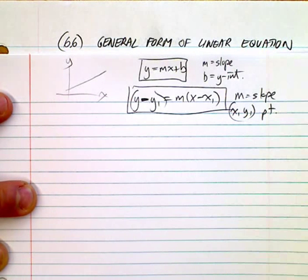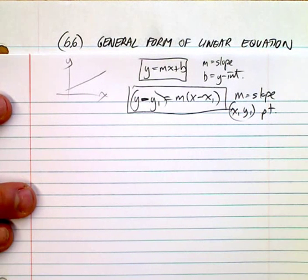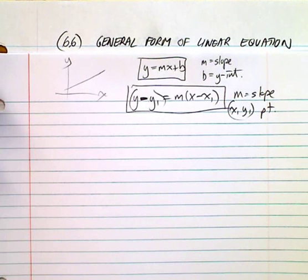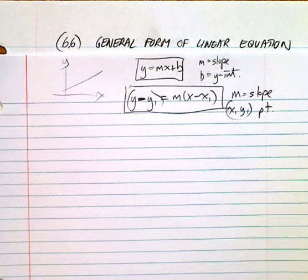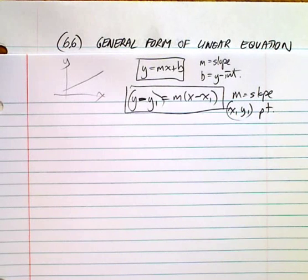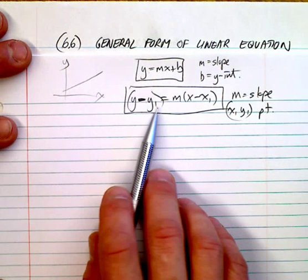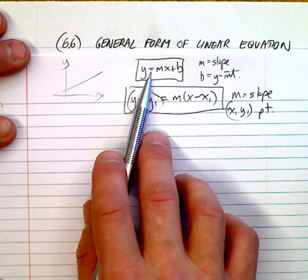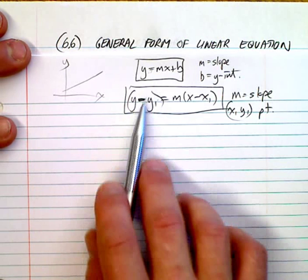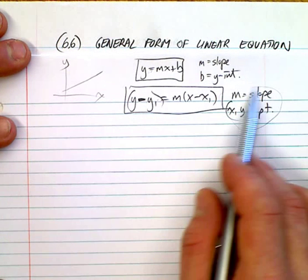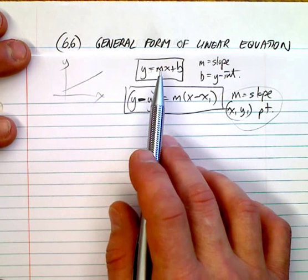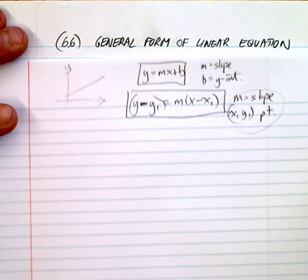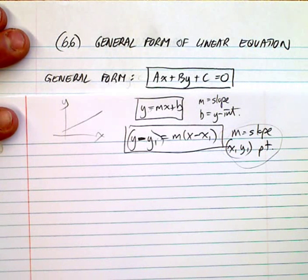All these forms have their uses and applications, but they're all doing basically the same thing. Which form you use depends on the situation. The slope-intercept form is best for graphing. We use point-slope to convert an equation into slope-intercept so we can extract the slope and y-intercept. And now we introduce what we call general form: ax plus by plus c equals zero.